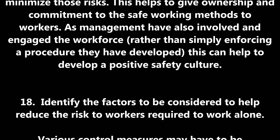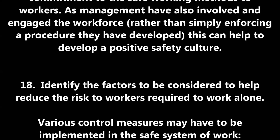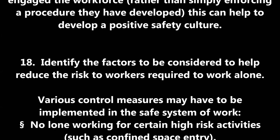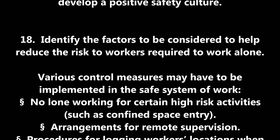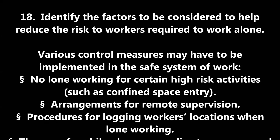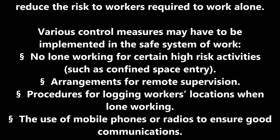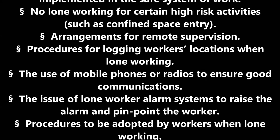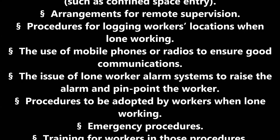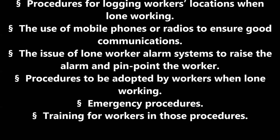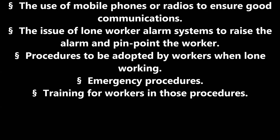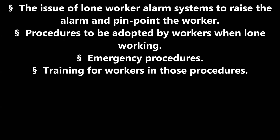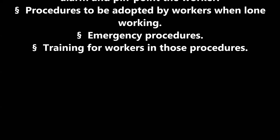Confined spaces: entry into confined spaces can be extremely hazardous and should always be under the control of a permit to work system. This requires a competent person to carry out a risk assessment and develop a safe system of work identifying all necessary precautions for entry and emergency arrangements. Question 16: Identify four categories of workplace safety signs and give an example of each. Prohibition signs stop dangerous behaviour — for example, no smoking. They are circular with a black pictogram on a white background with a red border and red diagonal cross bar. Warning signs tell people to be careful of a particular hazard — for example, forklift trucks operating in the area. They are triangular with a black pictogram on a yellow background with a black border.